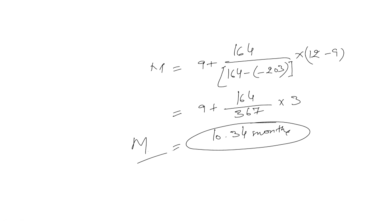You can check this also: at 10.34 months the NPV should be 0. After this, if you extend the credit period for more than 10.34 months — even for 10.50 months — the NPV will be negative. So at this maximum length of credit period, NPV should be 0. Now let us apply a check to verify whether NPV becomes 0 at this length of the credit period or not.